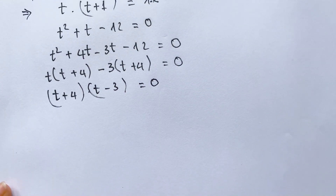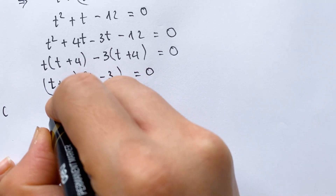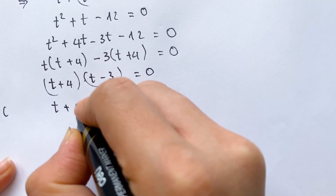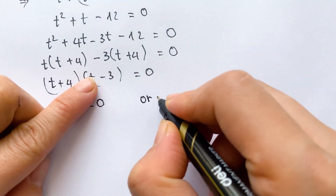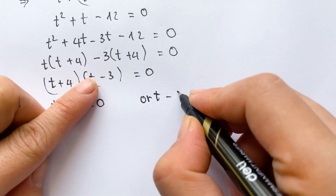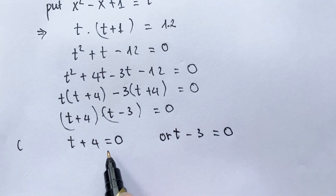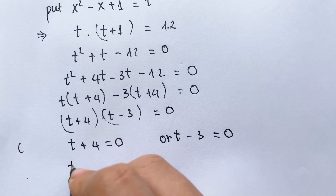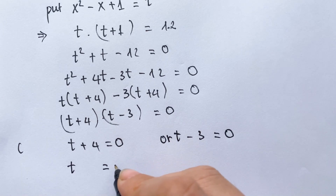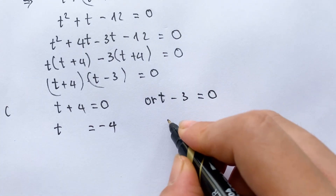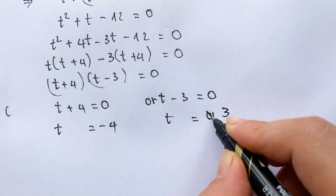This equals zero. For the two cases: t plus 4 equals zero, or t minus 3 equals zero. Therefore t equals minus 4, or t equals 3.